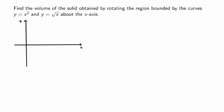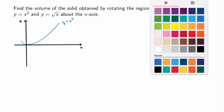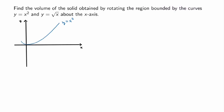I'm interested in the region bounded by two curves. The first curve is y equals x squared, which looks like a parabola. The second curve is y equals the square root of x. The region bounded by the two curves is shaded in red. I also indicate on the graph the axis of rotation, which is the x-axis.